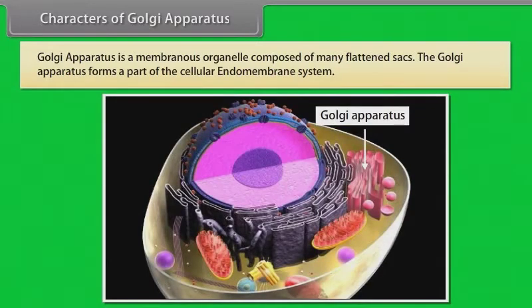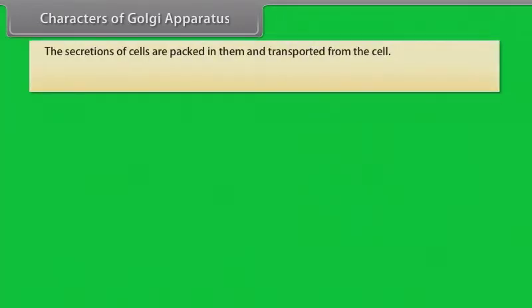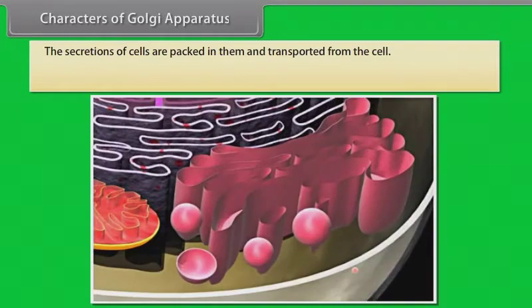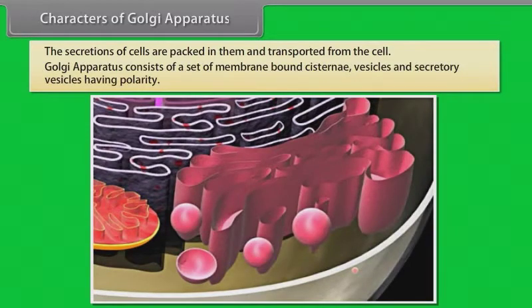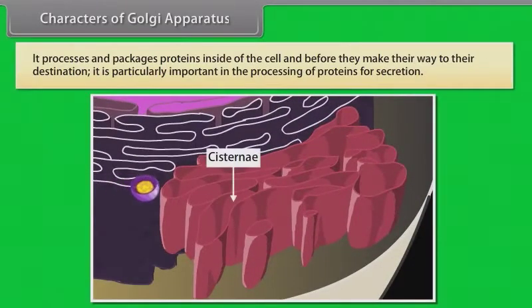Characters of Golgi apparatus: Golgi apparatus is a membranous organelle composed of many flattened sacs. It forms a part of the cellular endomembrane system. It was identified in 1898 by the Italian physician Camillo Golgi, after whom it is named. The secretions of cells are packed in them and transported from the cell. Golgi apparatus consists of a set of membrane-bound cisternae, vesicles and secretory vesicles having polarity. It processes and packages proteins inside the cell before they make their way to their destination, and is particularly important in the processing of proteins for secretion.